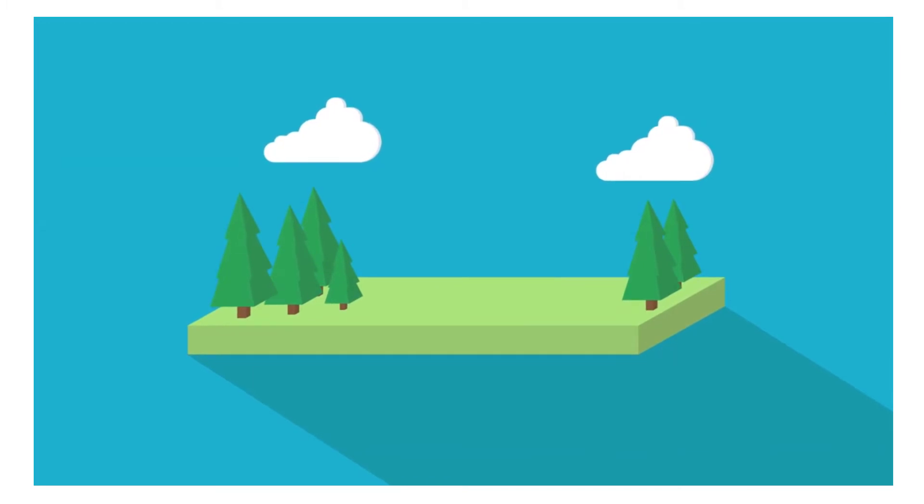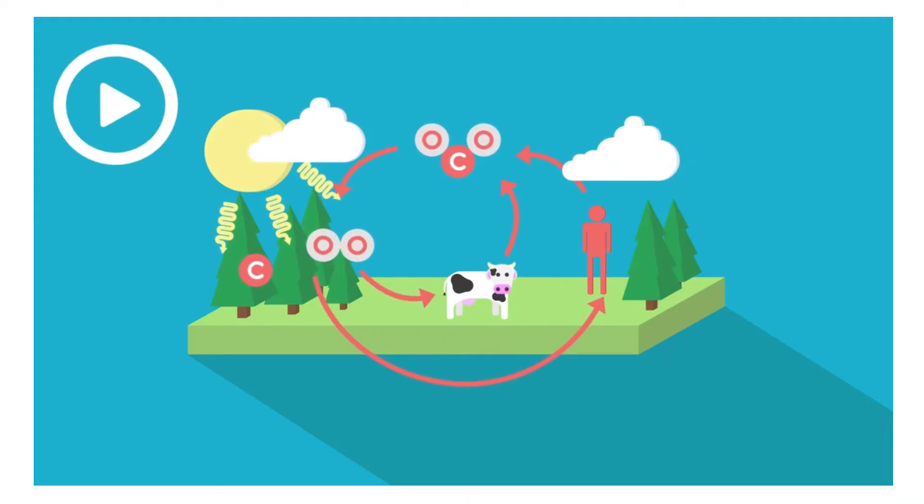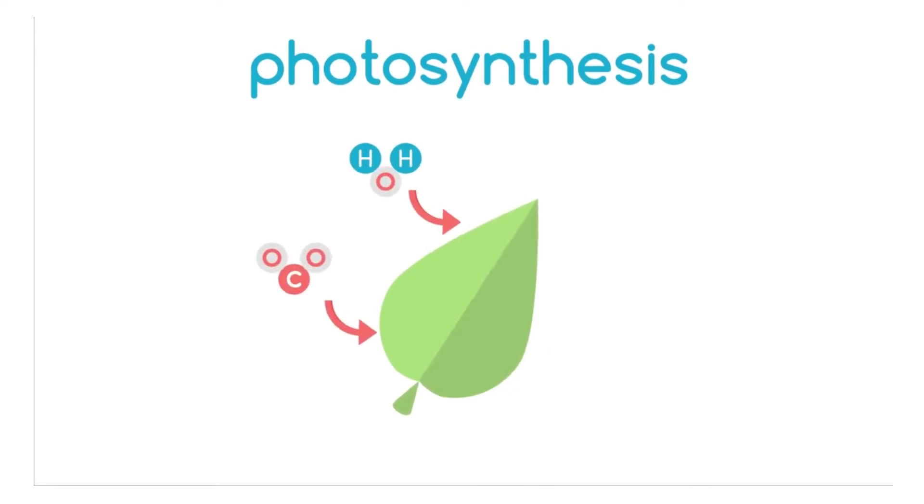First of all the natural carbon cycle. Can you remember what the process is called where plants capture carbon and give off oxygen? Pause the video whilst you think. Did you remember that this process is called photosynthesis?